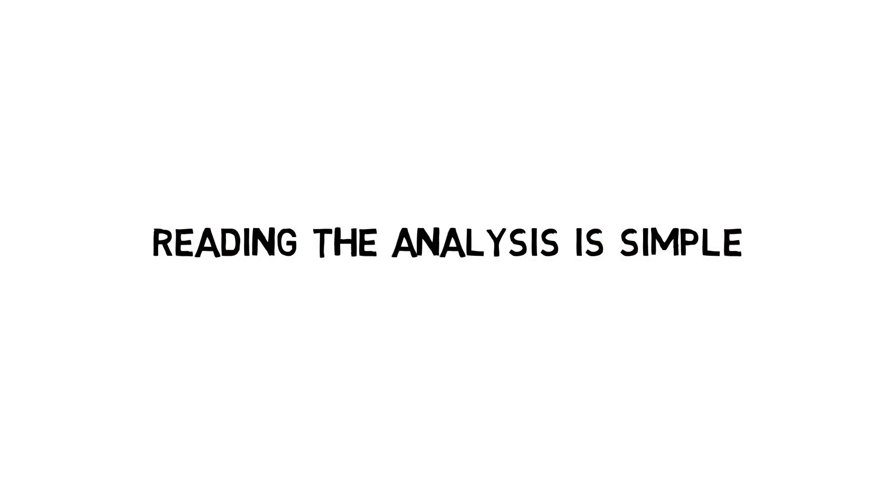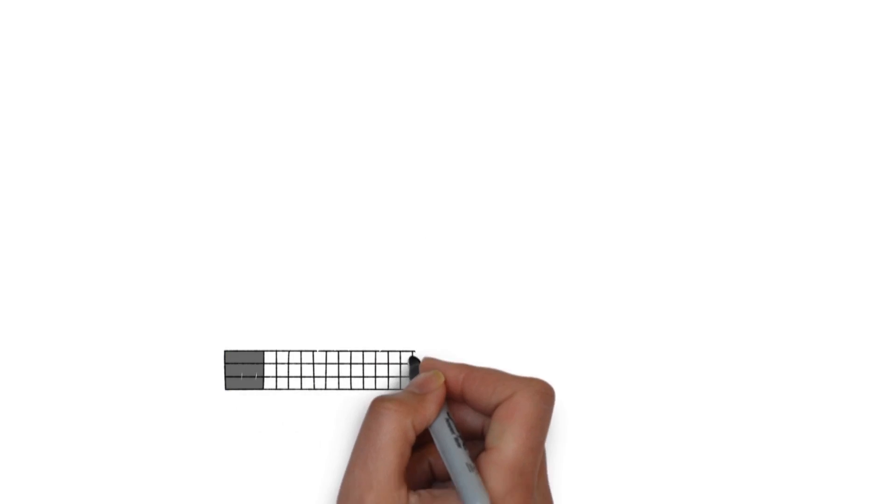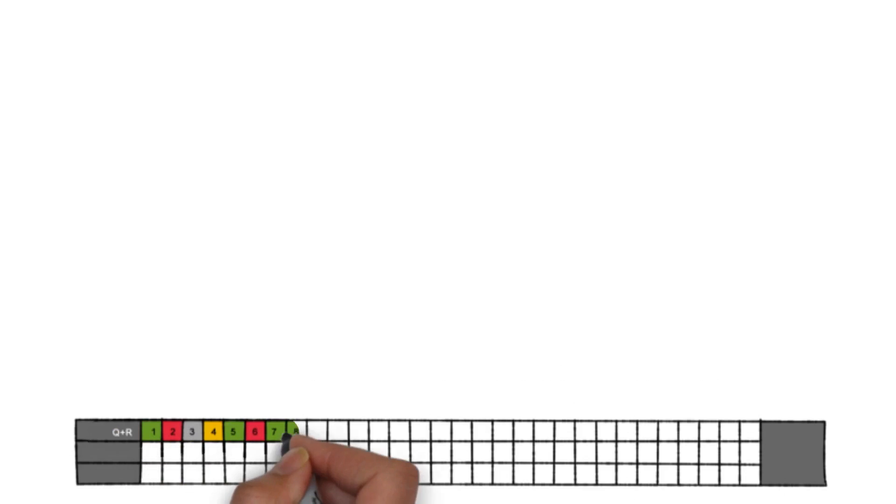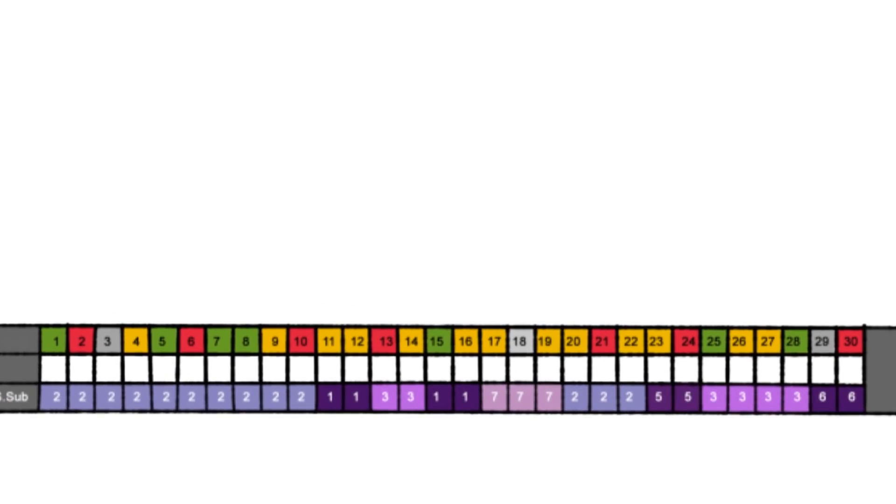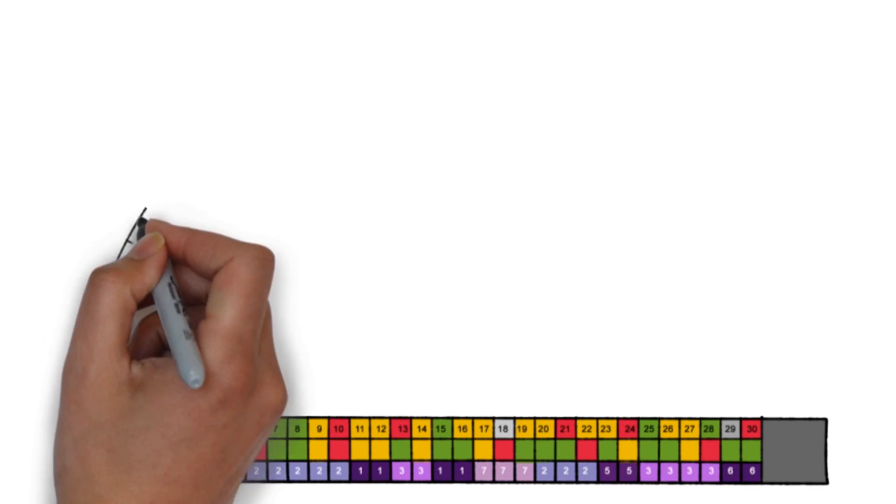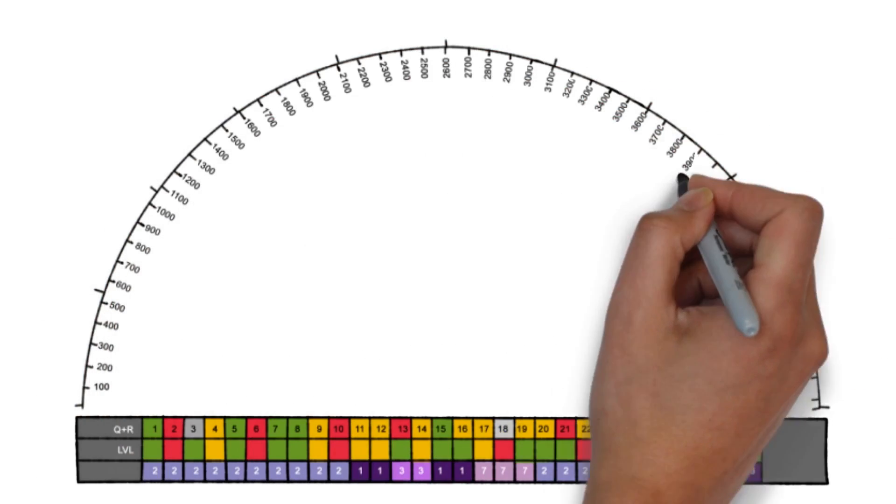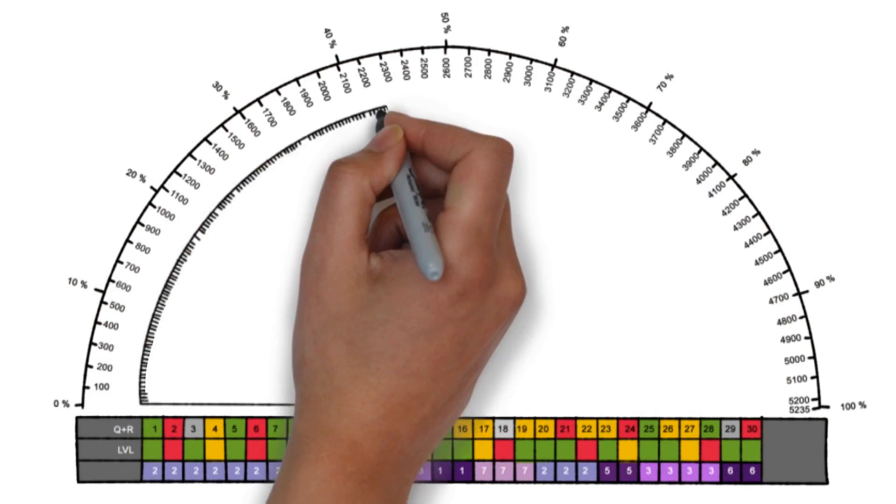Reading the analysis is simple. Now this is your physics mains paper with 30 multiple choice questions from various chapters that have different levels of difficulty. The arc shows you the total time it took you to solve all 30 questions.